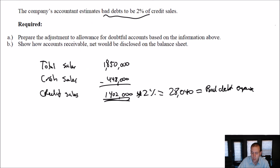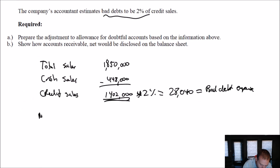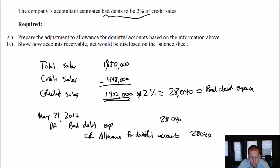We don't wait until next year when some customers pay and some don't. We have to record this estimate at year end. So let's do the journal entry. We figured out our bad debt expense — the journal entry is always the same. On the fiscal year end date, May 31st, 2017: debit bad debt expense, credit allowance for doubtful accounts, for $28,040. To answer the first question — prepare the adjustment — done. We have prepared the adjustment.